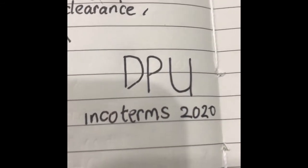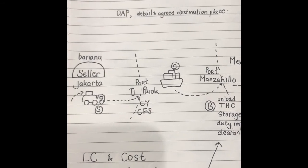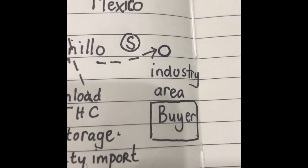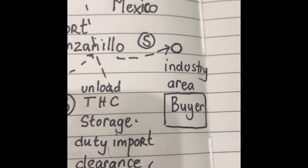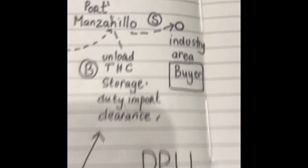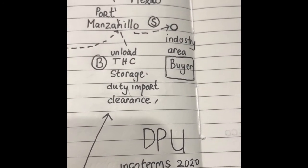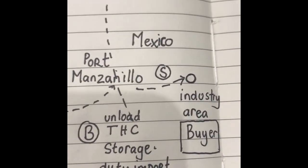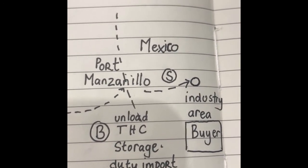The explanation of DPU is exactly the same as DAP. The only difference is here: under DAP, when you arrive at the final destination, the cargo is loaded. But under DPU — which stands for Delivery at Place Unloaded — the cargo is not loaded but unloaded.